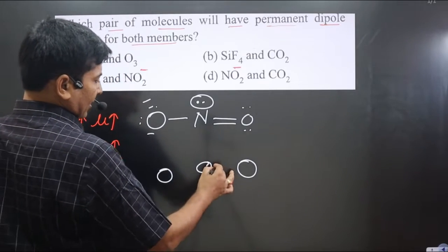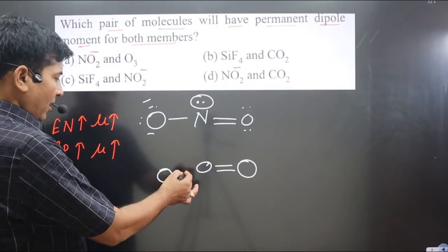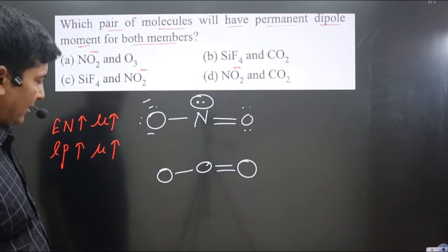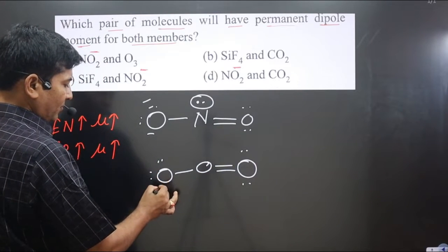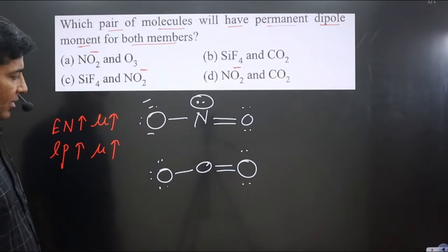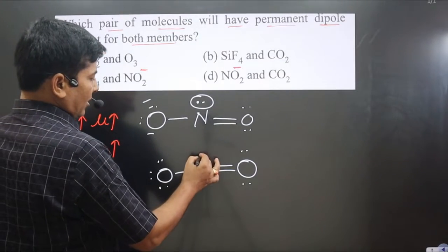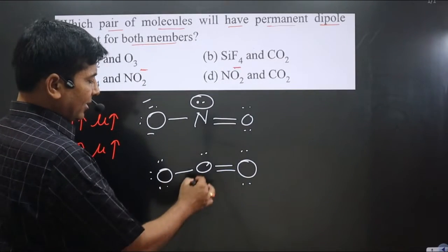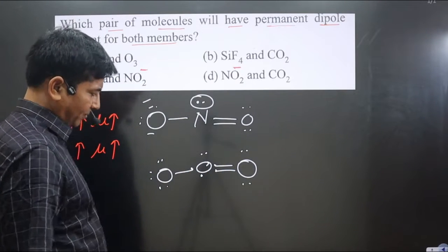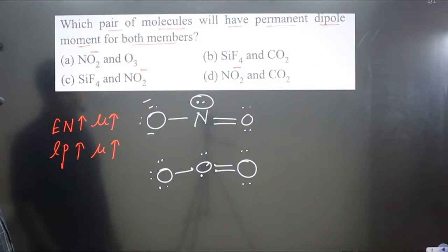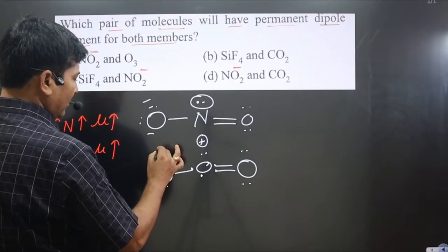In ozone, there are three oxygen atoms. The central oxygen forms a double bond with one oxygen and a single bond with another oxygen. The oxygen forming the double bond has two lone pairs, and the oxygen forming the single bond has three lone pairs. Oxygen has six valence electrons, and we can account for all six valence electrons here. The structure carries a positive charge on one side and a negative charge on the other.